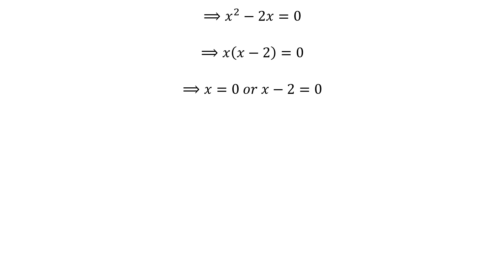Now, either x is equal to 0 or x minus 2 is equal to 0, which implies x is equal to 0 or x is equal to 2. The value of x must be greater than square root of 2 so x is equal to 2.